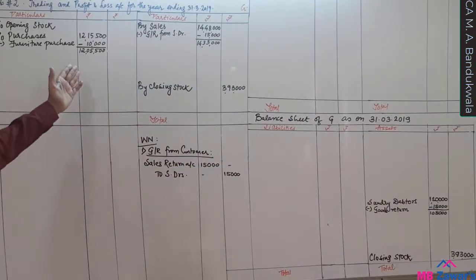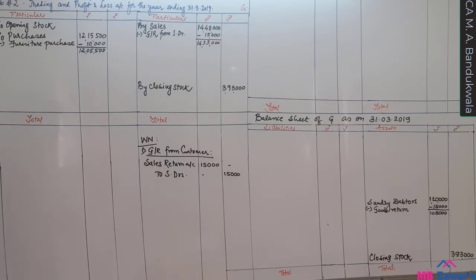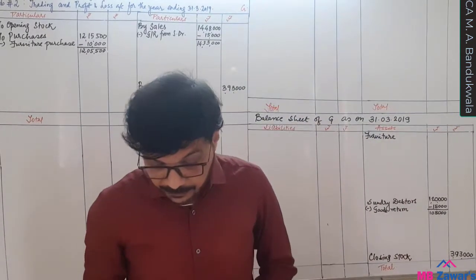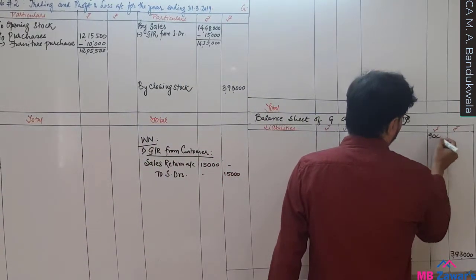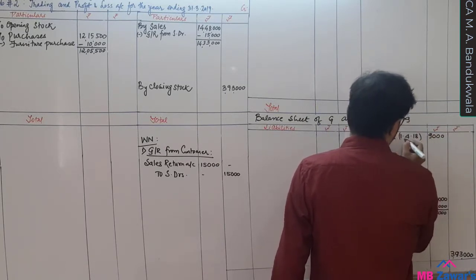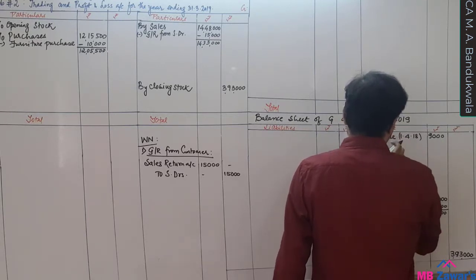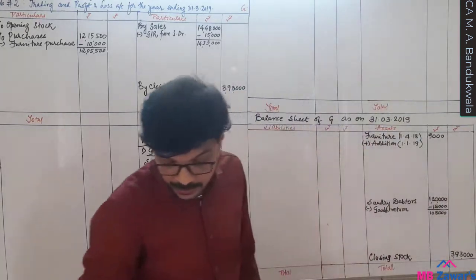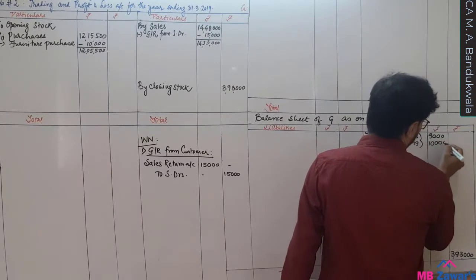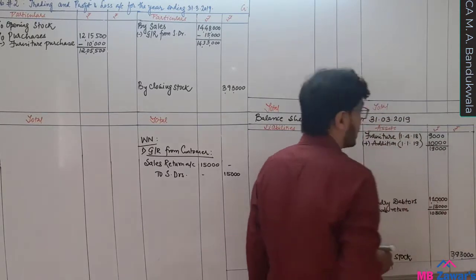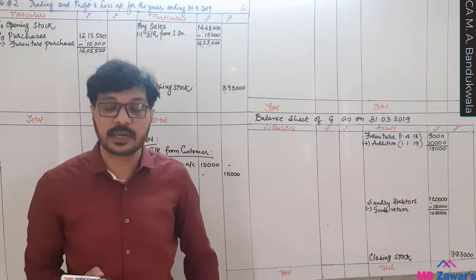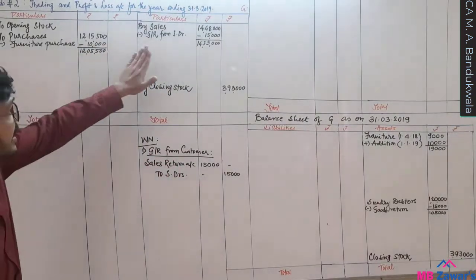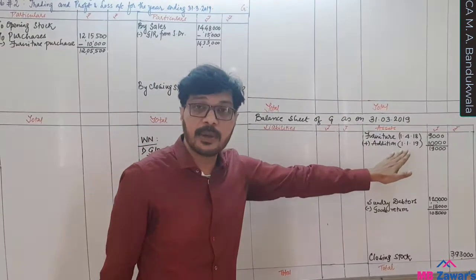Second effect: furniture. We have subtracted the furniture which was wrongly included in purchases. Now for the asset side — furniture already on hand is 9,000 as on 1st April 18. Plus addition: furniture purchased on 1st January 19 = 10,000. Total furniture becomes 19,000. I am writing this in the inner column because depreciation effect still needs to be given. One effect: subtracted from purchases — that is credit. Other effect: added to furniture — that is debit.